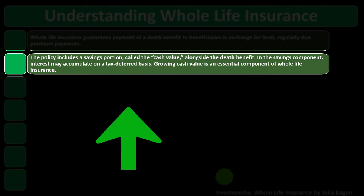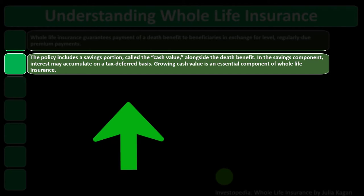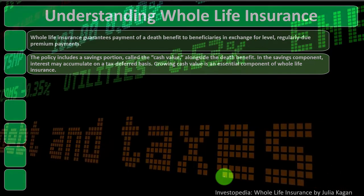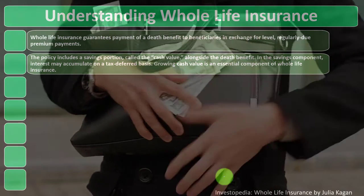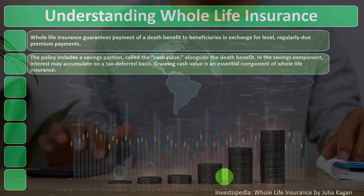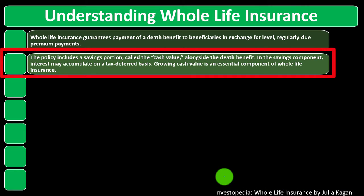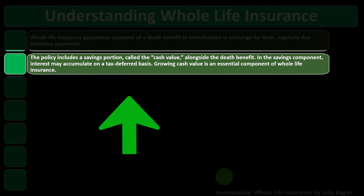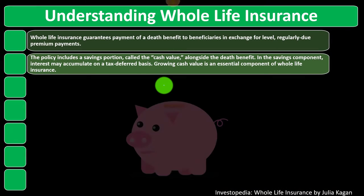The policy includes a savings portion called the cash value — kind of like the investment component alongside the death benefit. Interest may accumulate on a tax-deferred basis, which might be one rationale for putting money into it. But you might think the old adage: why not buy cheaper term and invest the difference? If you could invest in an IRA or 401k plan, you might get a similar tax benefit. Maybe those tools are capped out, or maybe there's another reason for putting the money into the life insurance with its savings component.